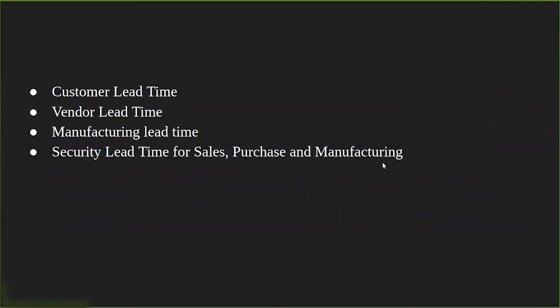In Odoo we have different types of lead times: there is customer lead time, vendor lead time, manufacturing lead time, and we have security lead times for sales, purchase, and manufacturing. We'll be discussing these lead times in detail later in this video. Now let's see how we can make use of lead times to manage our supply chain scheduling.